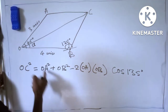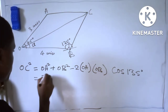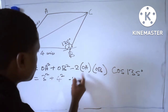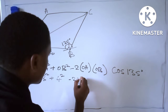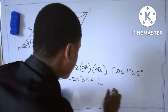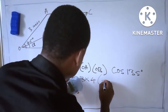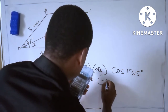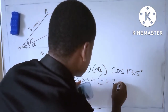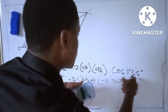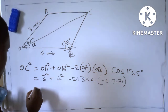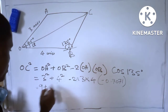Continuing with the calculation: OA is 3, OB is 4. So we have 3² + 4² − 2(3)(4) cos 135°. Cos 135° gives −0.771.